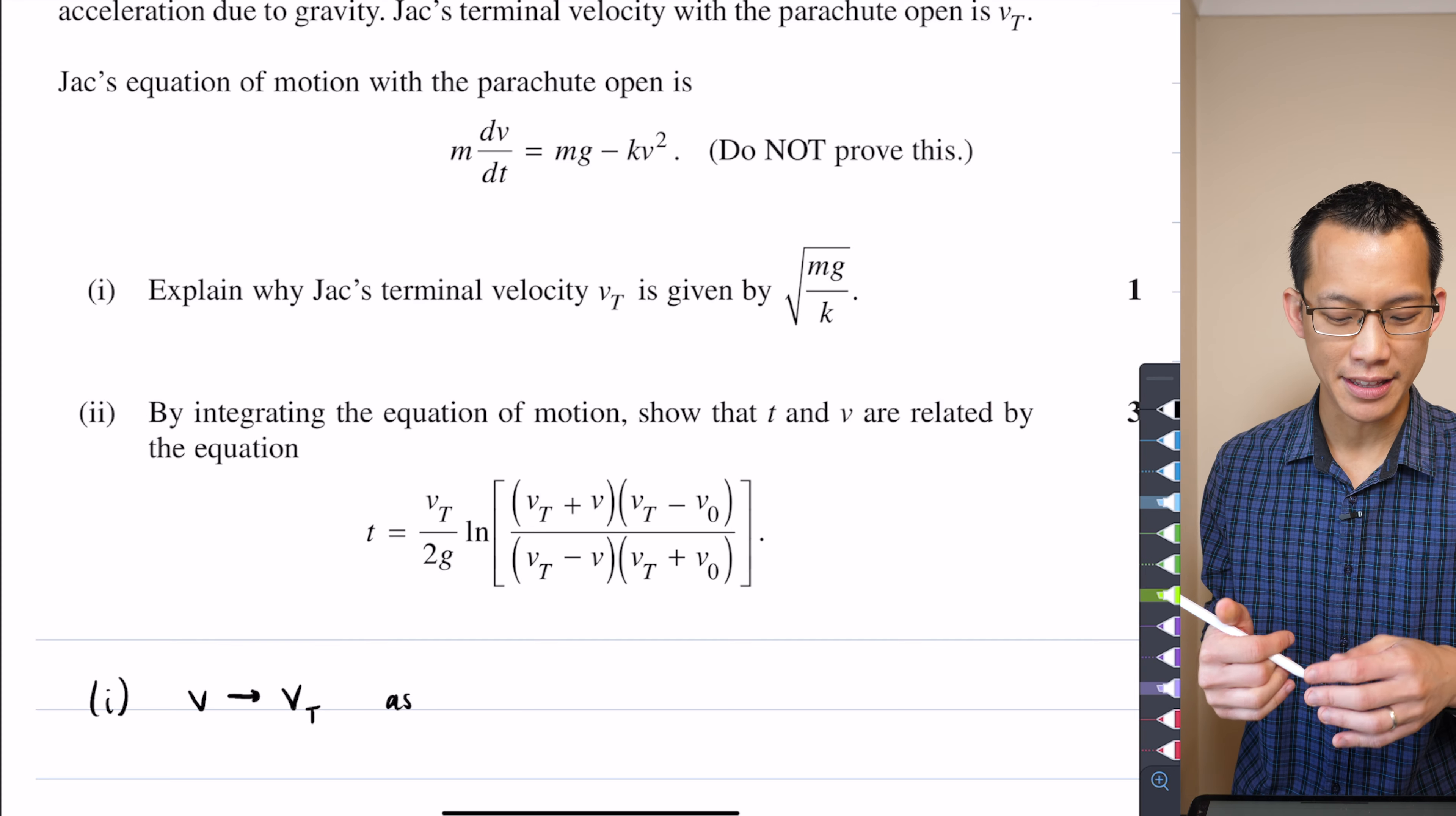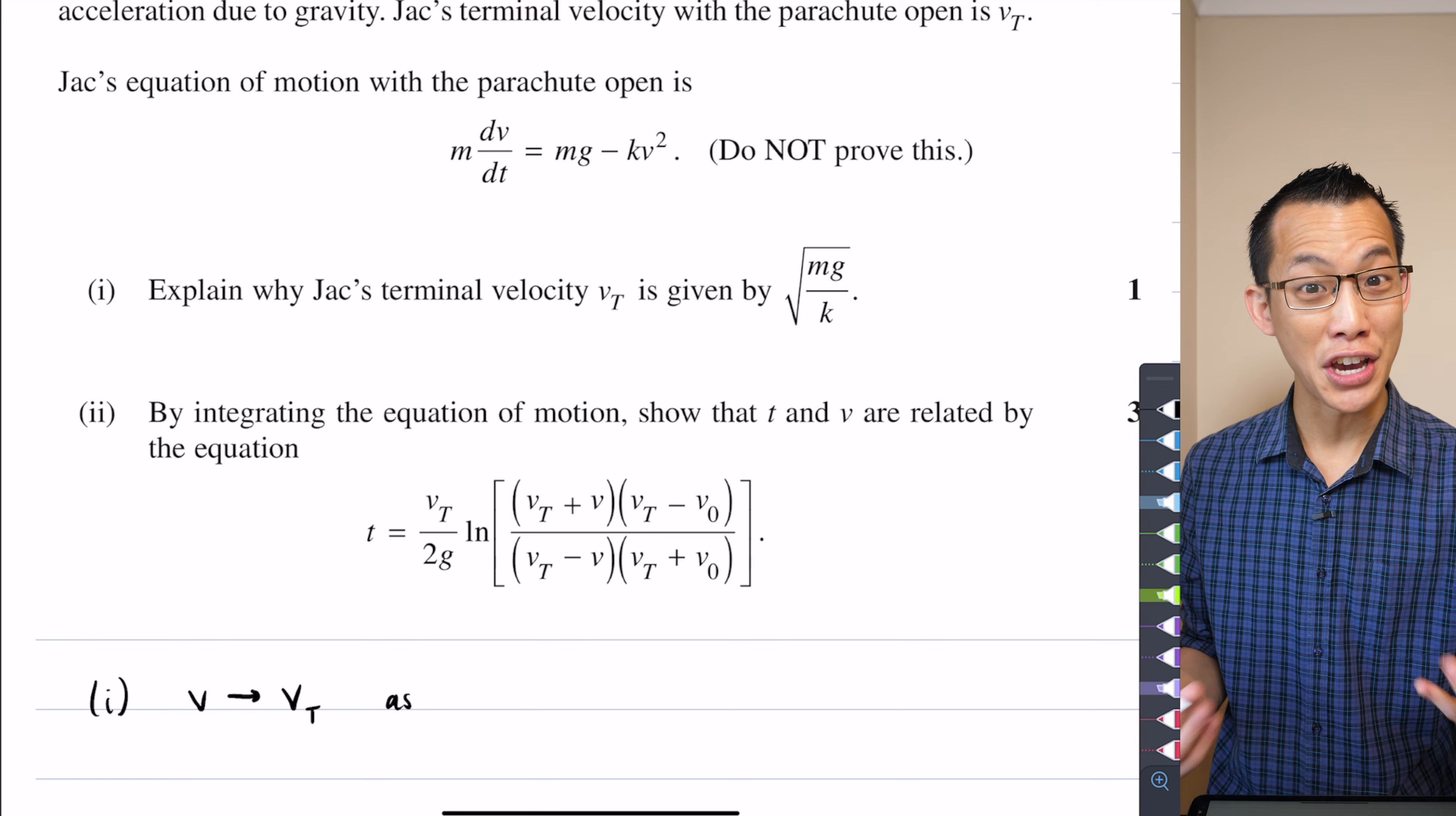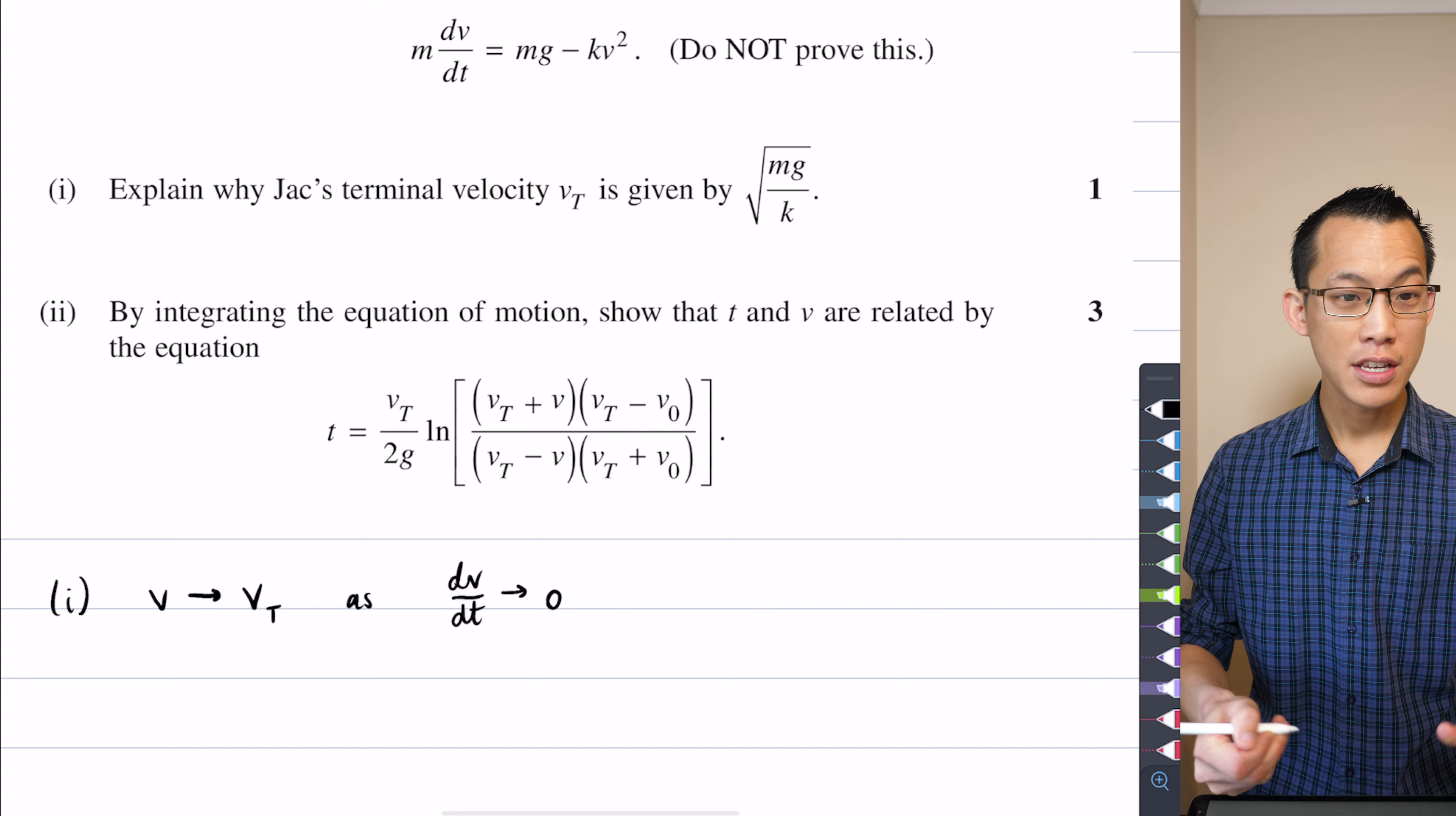But the whole idea is that your acceleration is getting closer and closer to zero. Your velocity is no longer changing very much. That's the whole idea of terminal velocity. It's where you terminate. So therefore I'm going to say this limit happens as dV on dt acceleration approaches zero.